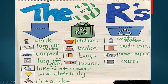Here is a catch-all of Reduce, Reuse, and Recycle items. Reduce: save water, carpool, turn off lights, take shorter showers, save electricity, ride a bike. Reuse: clothes, books, bags, boxes. Recycle: water bottles, soda cans, newspaper, games.